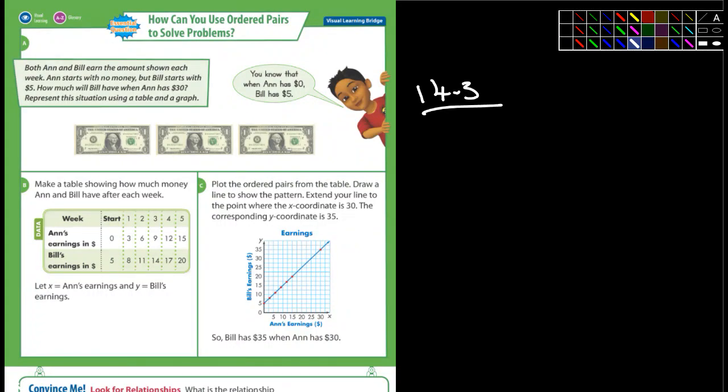Good morning fifth graders, so we're starting 14-3 and we'll go through 14-3 today, and then tomorrow on Zoom we'll see if anybody has any questions. So what page is this? Page 574. It says both Ann and Bill earn the same amount each week. Ann starts with no money but Bill starts with five dollars. How much will Bill have when Ann has 30?